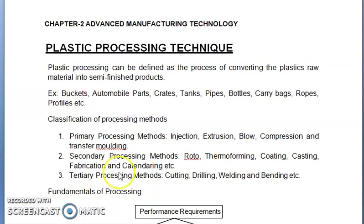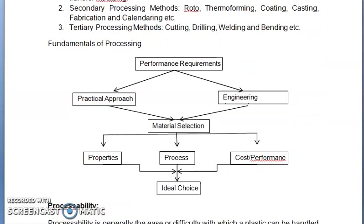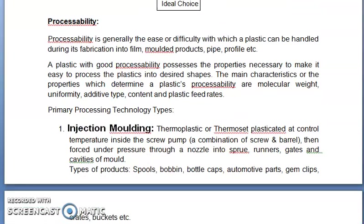The fundamentals of processing. First is performance requirement, which includes practical approach and engineering. Then material selection based on properties, process, cost, or performance, and then the ideal choice. Processability is generally the ease or difficulty with which a plastic can be handled during its fabrication into film. A plastic with good processability possesses the properties necessary to make it easy to process into the desired film. The main characteristics that determine processability are molecular weight, uniformity, additive type, content, and plastic feed rate.